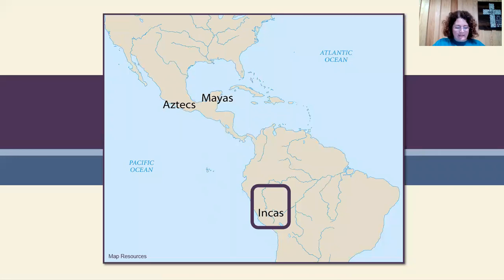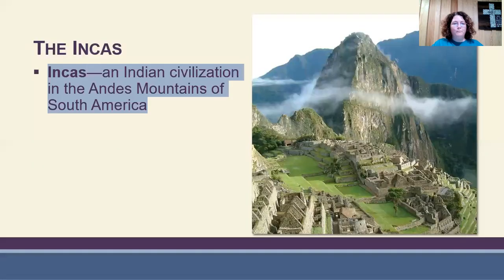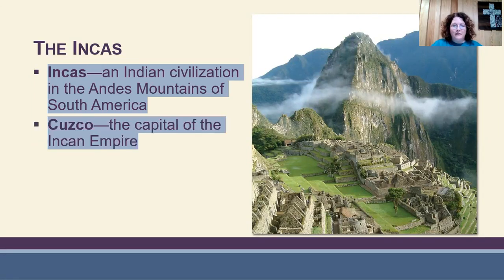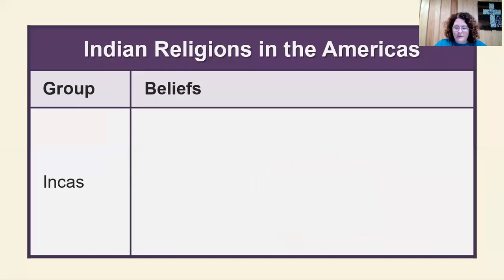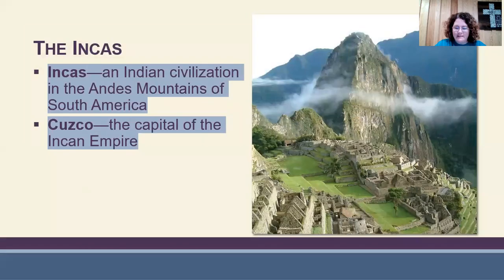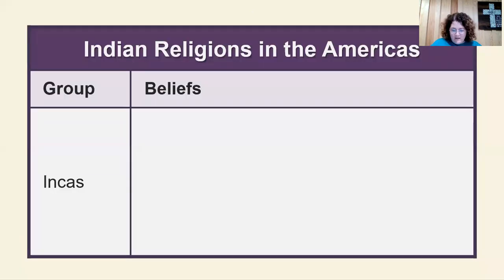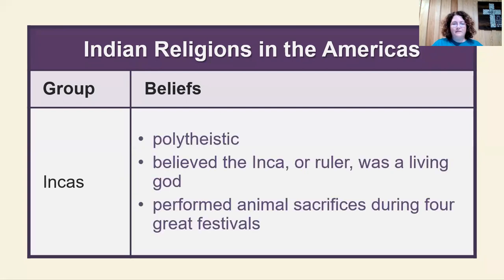Now looking at the Incas in what is modern-day Peru. The Incas were an Indian civilization in the Andes mountains of South America. Their capital was Cuzco. They built large buildings out of stone with great precision — without the use of mortar, they constructed buildings with such accuracy that a knife blade cannot fit between the stones. Their religion was polytheistic. The ruler retained the title of Inca and served as the emperor's living god. They performed animal sacrifices during four great festivals.